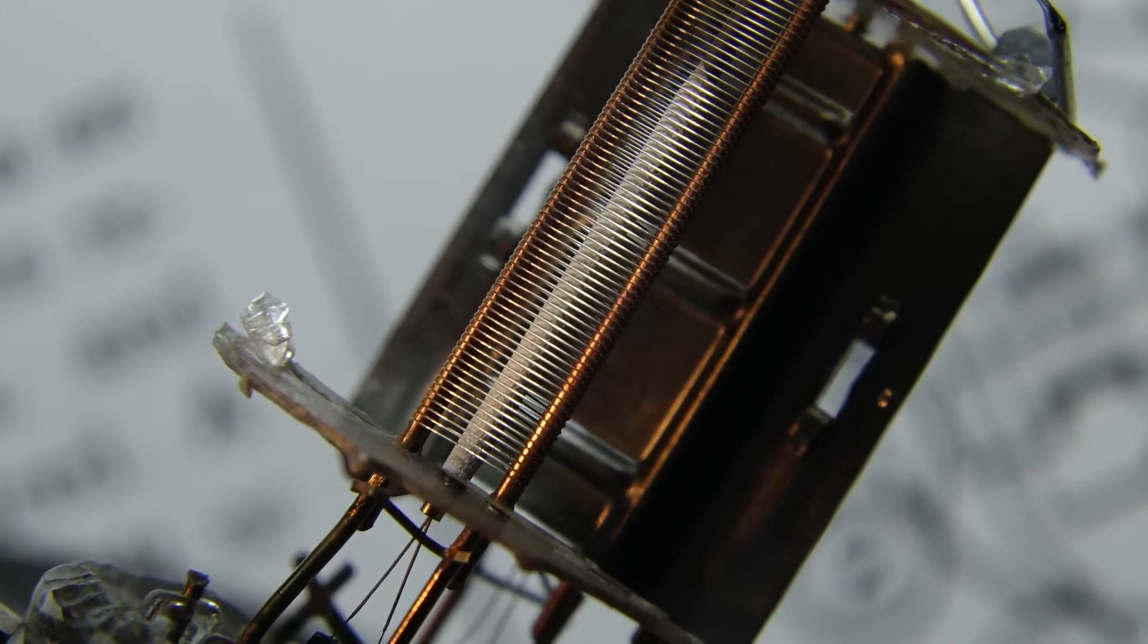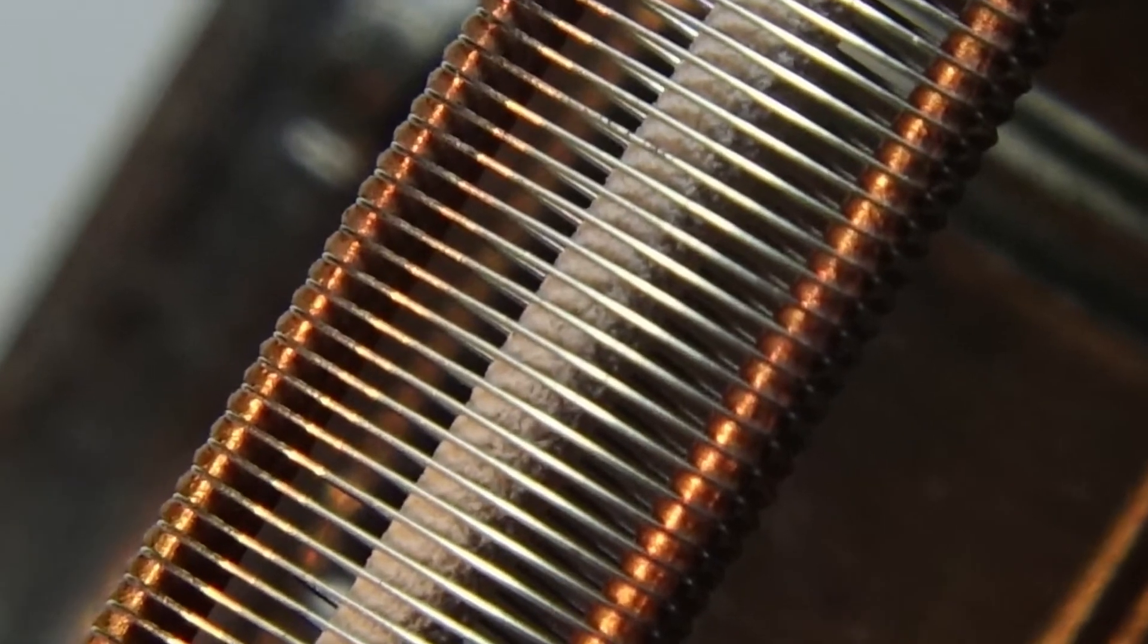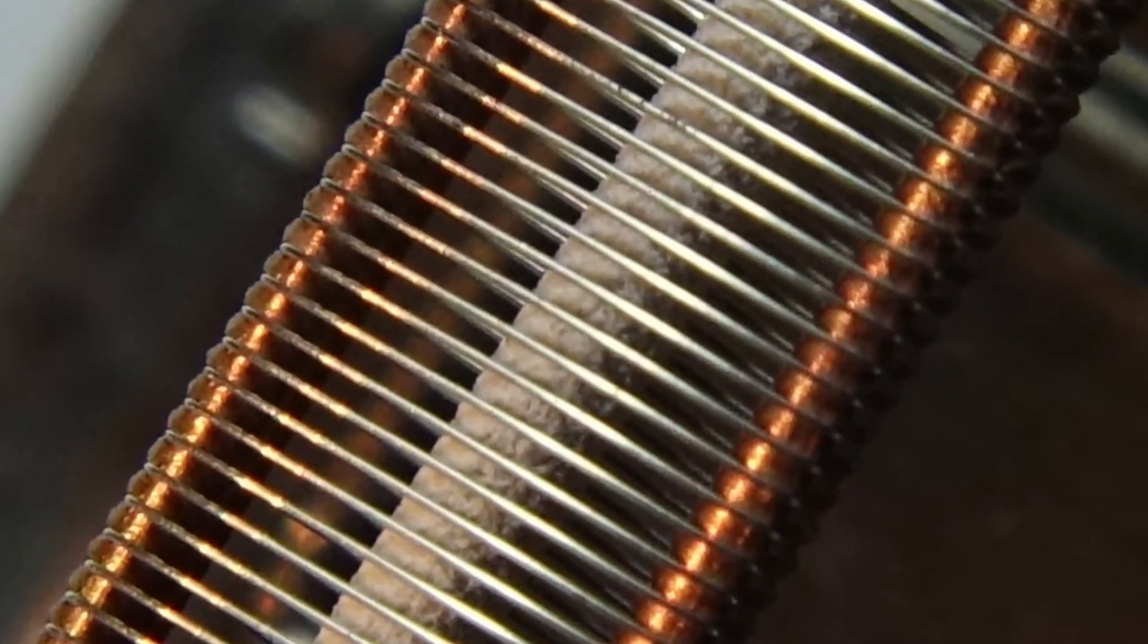Here it is, the workhorse, the 12AX7. I'm going to zoom in here on the grid, show the grid structure as well as the cathode coating.